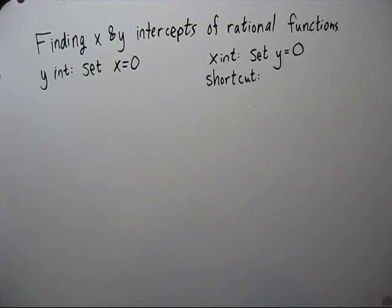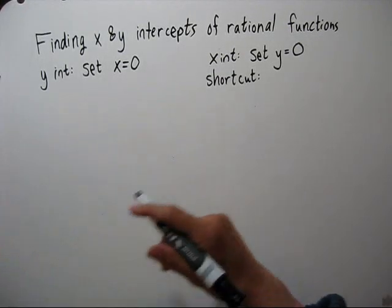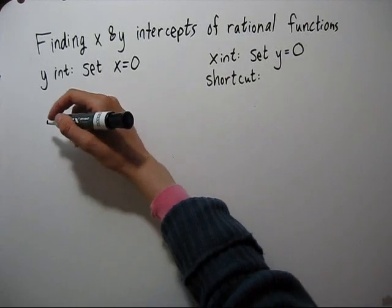Finding x and y intercepts of rational functions is just like finding the intercepts of any other function. Namely, we set x equal to zero to find the y intercept and set y equal to zero to find the x intercept. So let's do one.